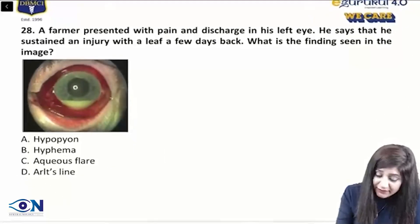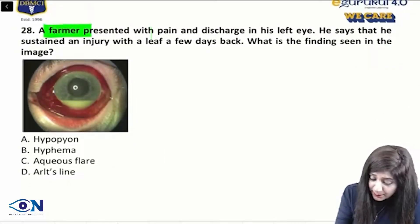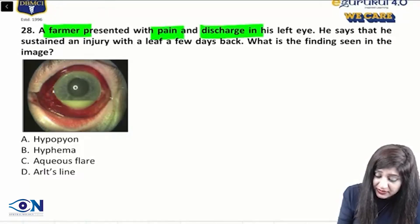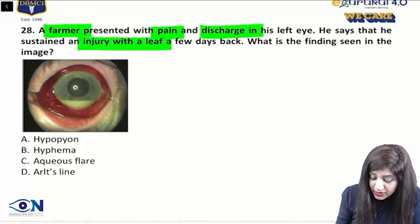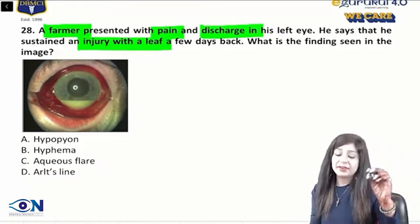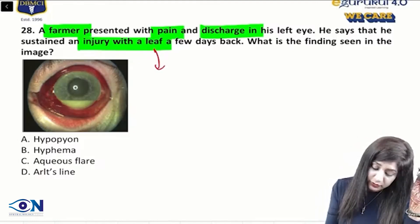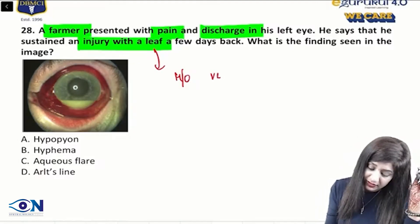Now see this question, we have a farmer who is coming with pain, discharge and he is also having an injury with a leaf. Now they are giving you the history of vegetative trauma.